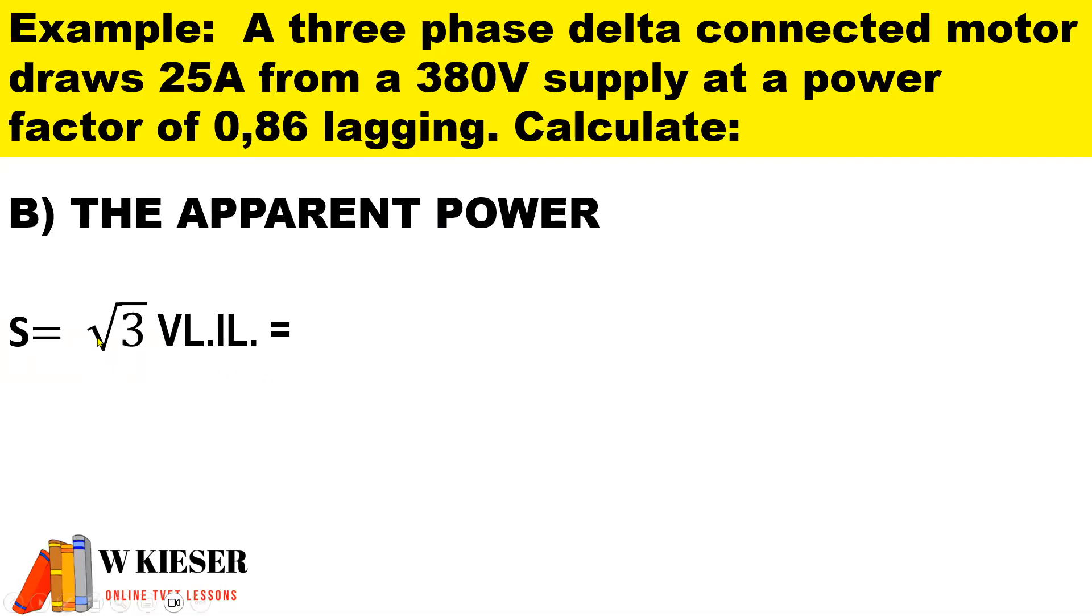To calculate the apparent power, the symbol is S. It'll be square root 3 times the line voltage times the line current. And that gives us 16.454 kVA.